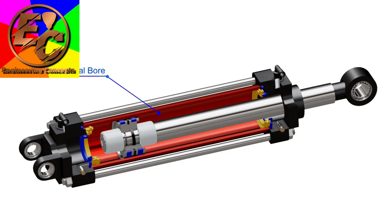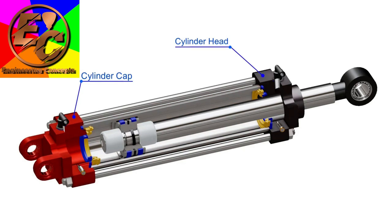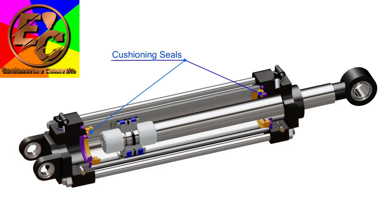This cylinder is generally made up of aluminium or steel. A cylinder cap encloses the cylinder chamber at one end, and the cylinder head encloses the chamber from the other end. Cushioning buffers and seals are installed on the respective ends.